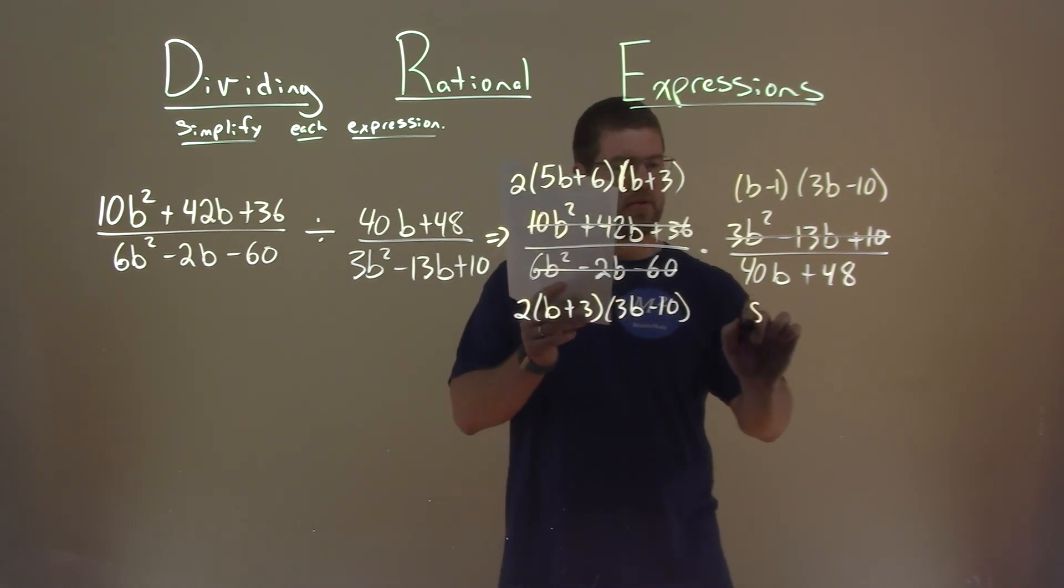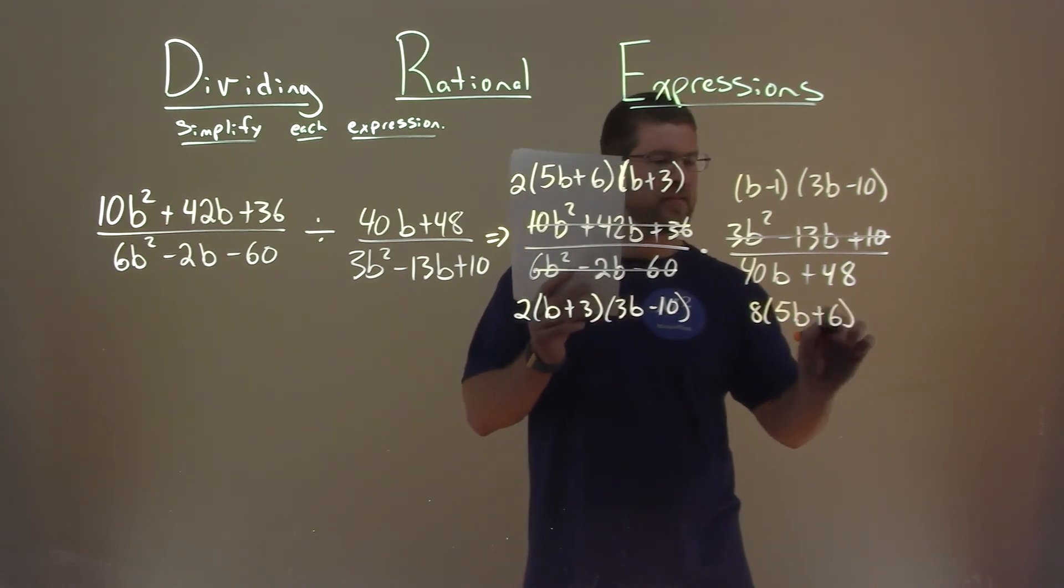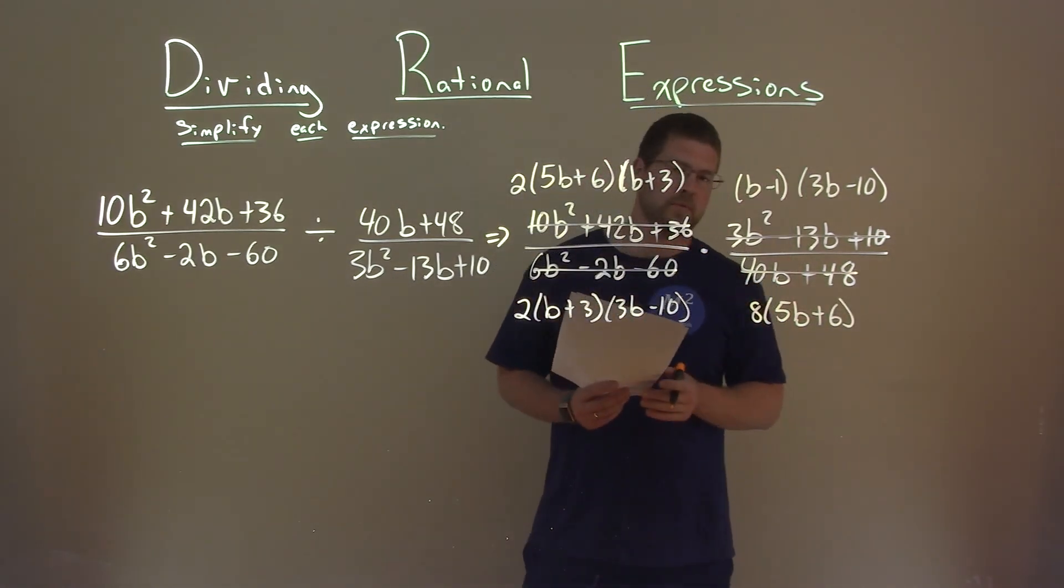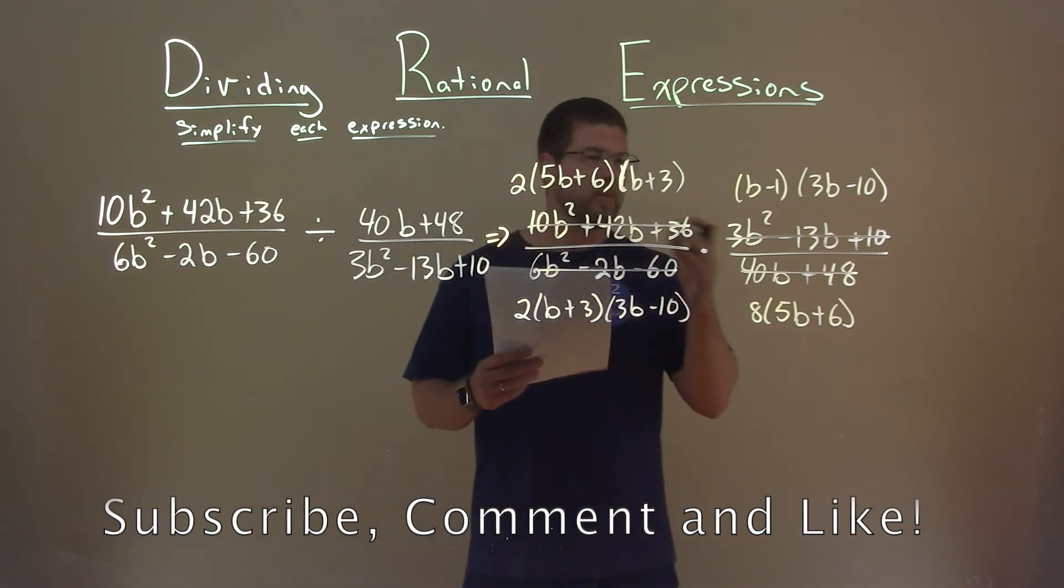We're just pulling out an 8. If we do that, we're left with 8 times 5b plus 6. So we replaced a whole bunch of parts of these fractions and put them in factor form.